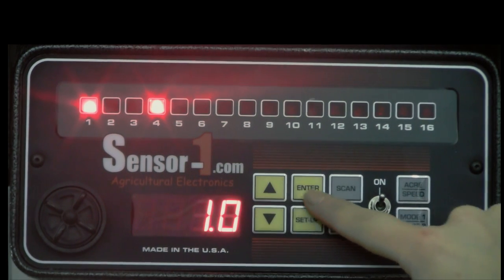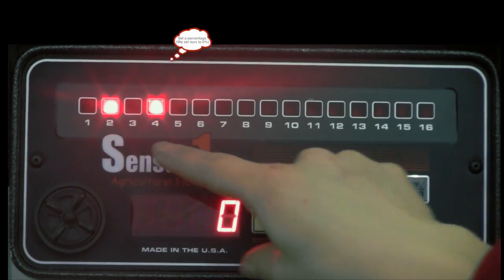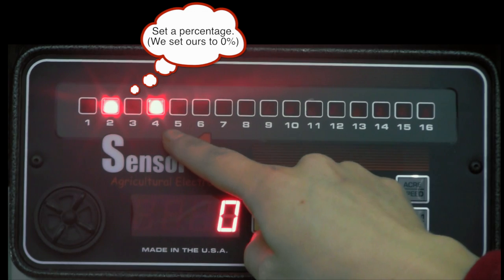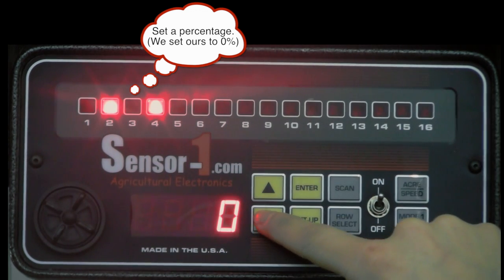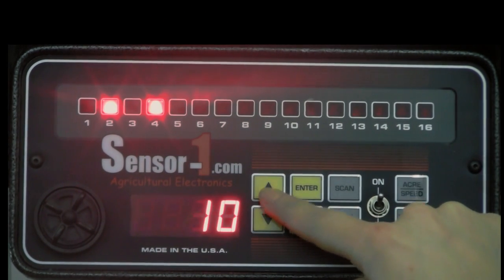Lights number 2 and 4 will come on and this is where you can set up a percentage for population gain. The default setting is 0 and most do not change the setting. To move on to the next step, press enter.